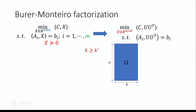The problem on the left is the original semidefinite program where we minimize CX subject to constraints. The main idea behind the Burer-Monteiro approach is to write X as U times U transpose, where U is an N cross K matrix with K much smaller than N. This enforces two things: X is automatically positive semidefinite because it's written in square form, and X is automatically low rank because U is a tall matrix. The modified problem minimizes C times U U transpose subject to A(UU^T) equal to B.